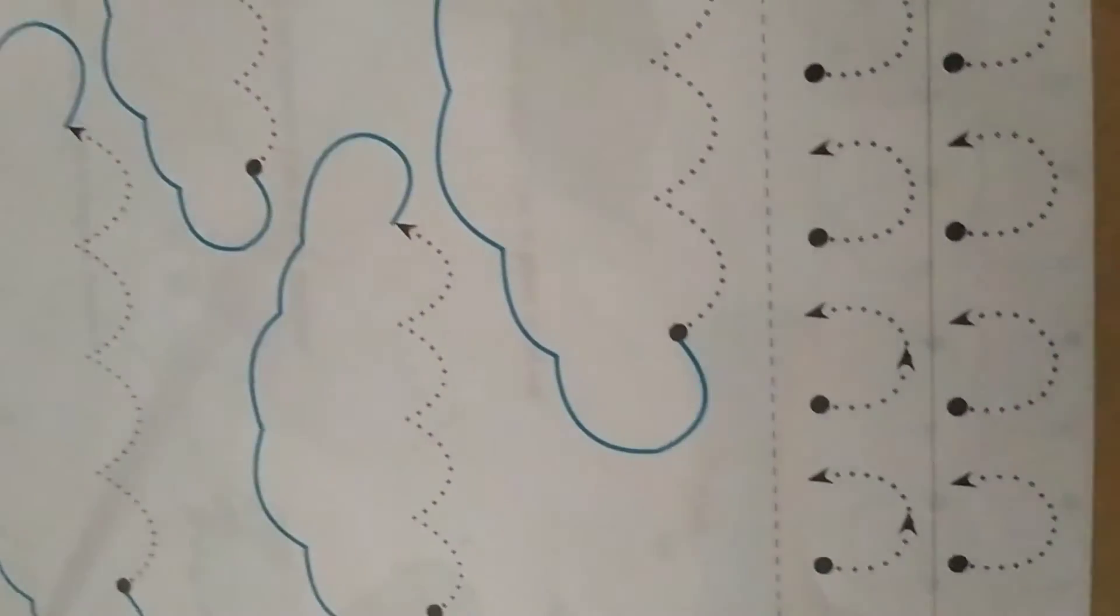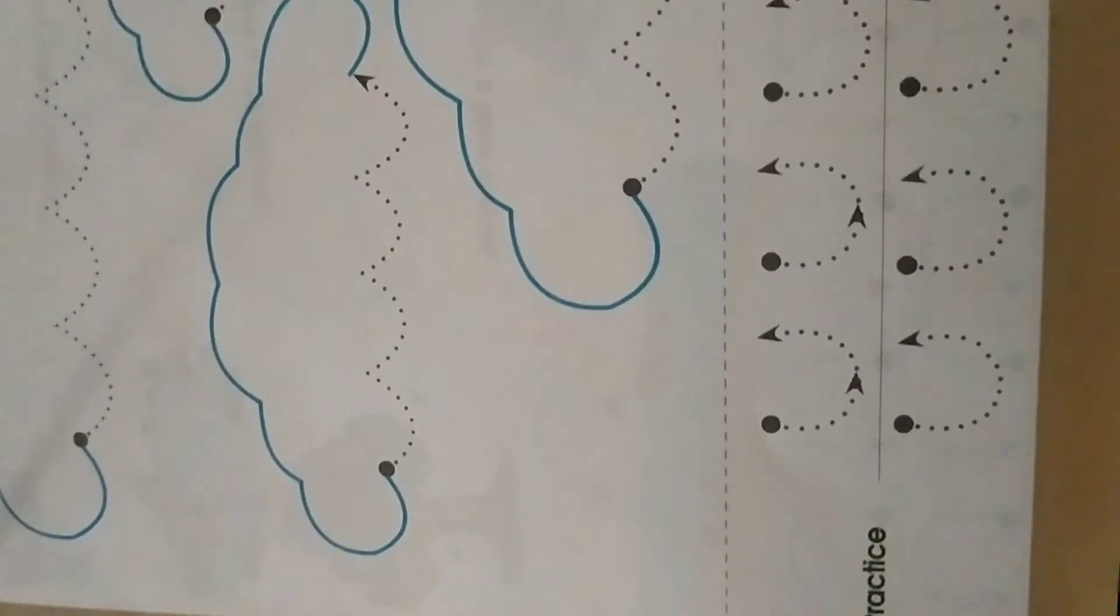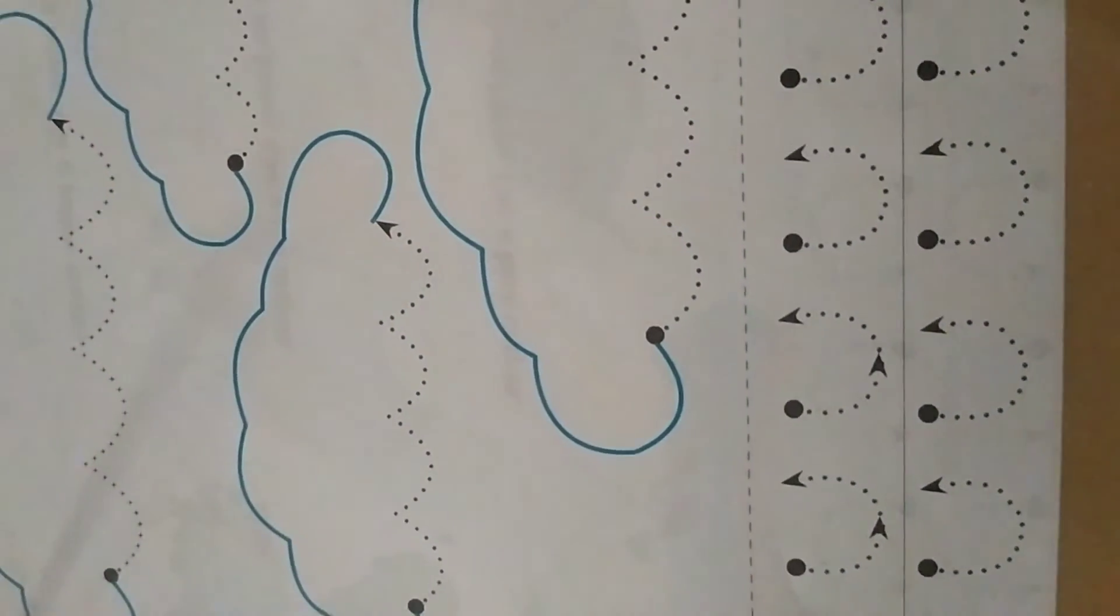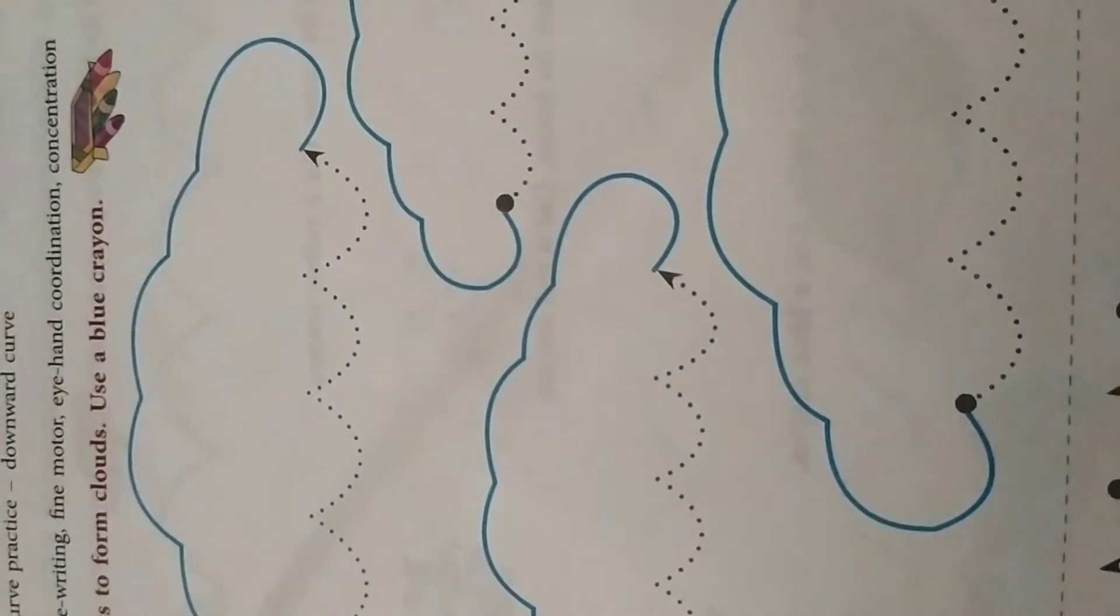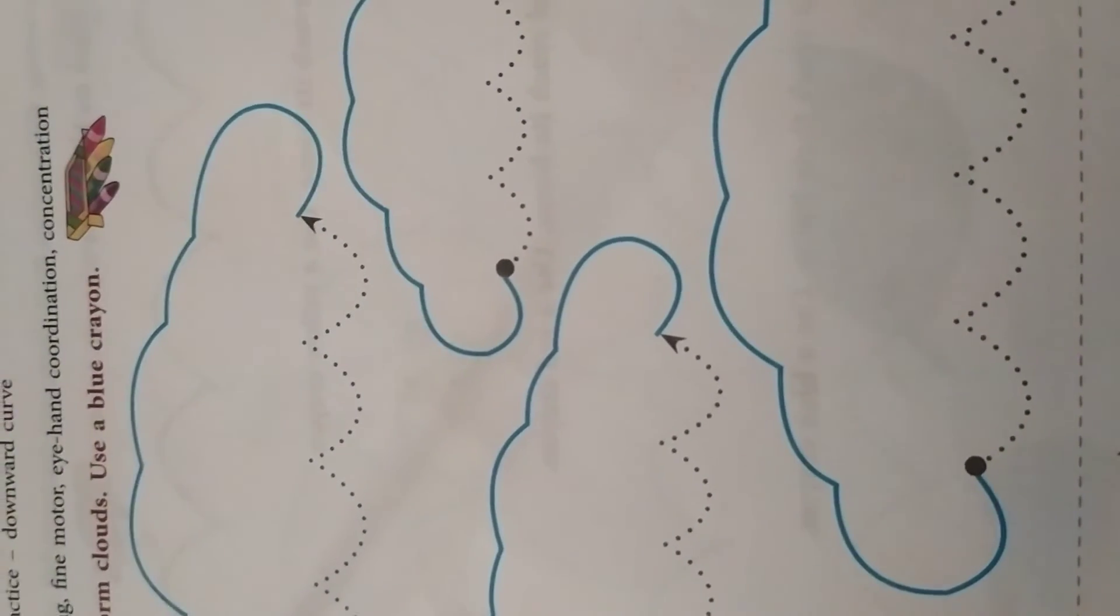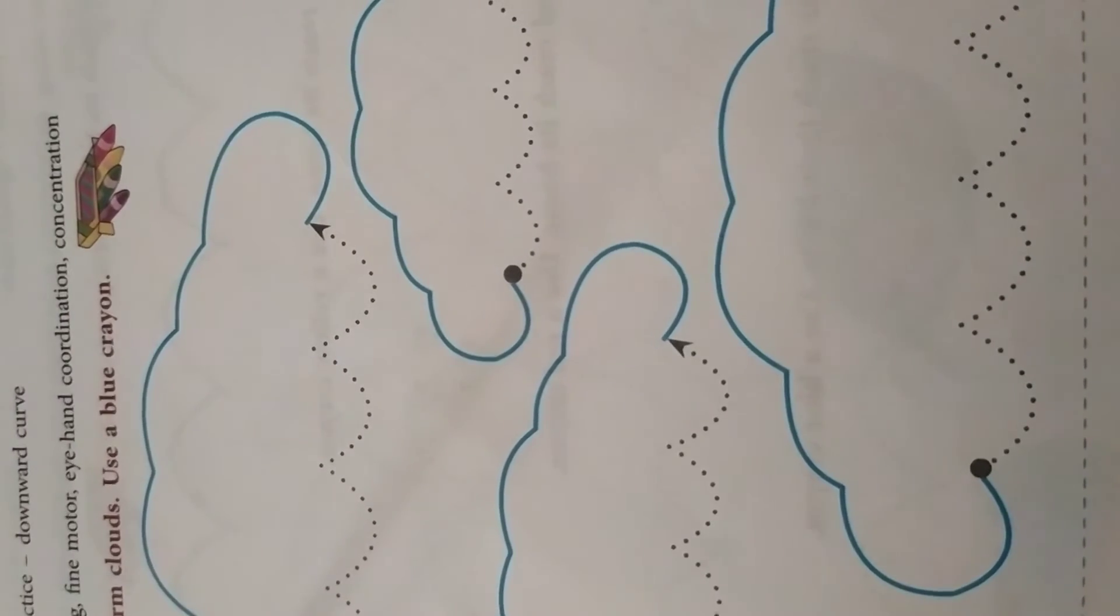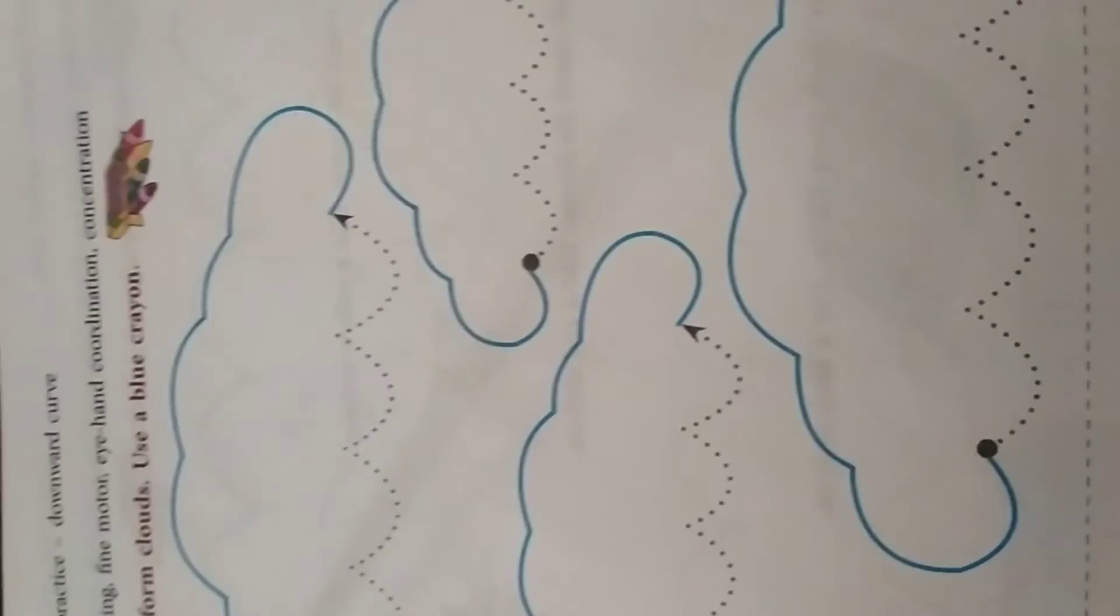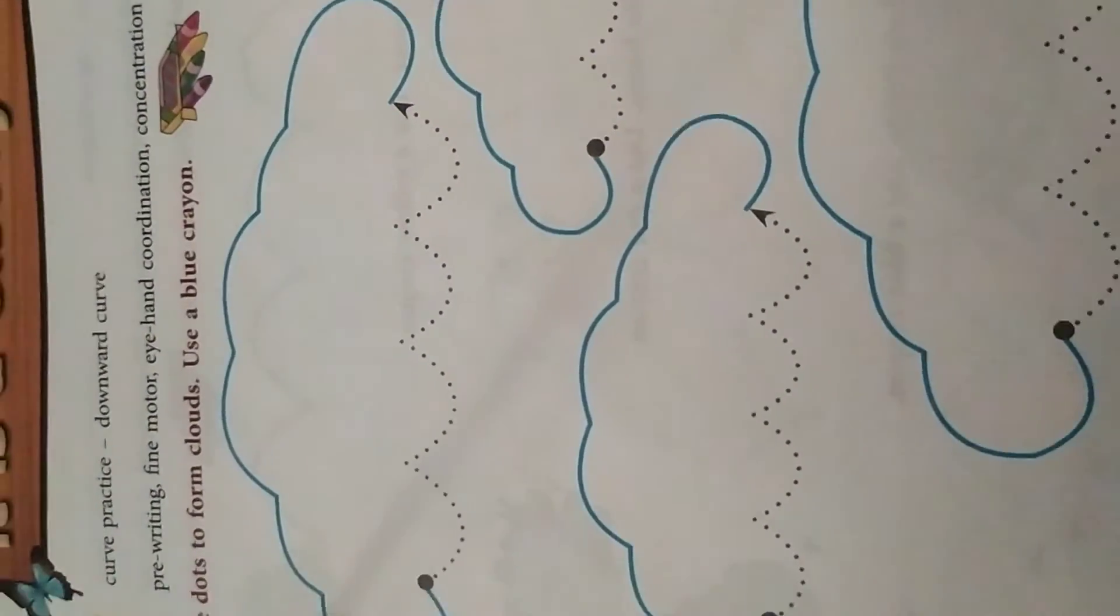Okay. Then down also, two lines are given to practice downward curve. So by this activity you will improve your pre-writing skills and fine motor skills and eye-hand coordination and concentration levels also will improve.